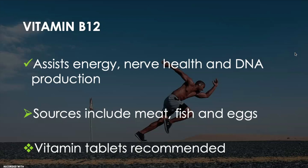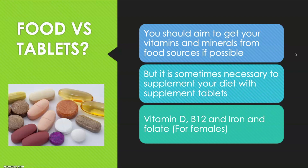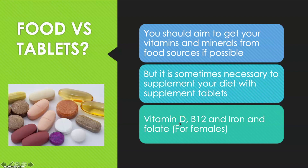Vitamin tablets are recommended for B12 because it can be hard to get from natural food sources, especially if you're vegetarian or vegan. A common question is: should I get my micronutrients from food or tablets? The general guideline is to aim for food sources if possible, but sometimes it's necessary to supplement. For example, if you are vegetarian, vegan, female, or an athlete. Specific recommendations: Vitamin D if you live somewhere with little sun, Vitamin B12 as mentioned, and iron and folate for females.